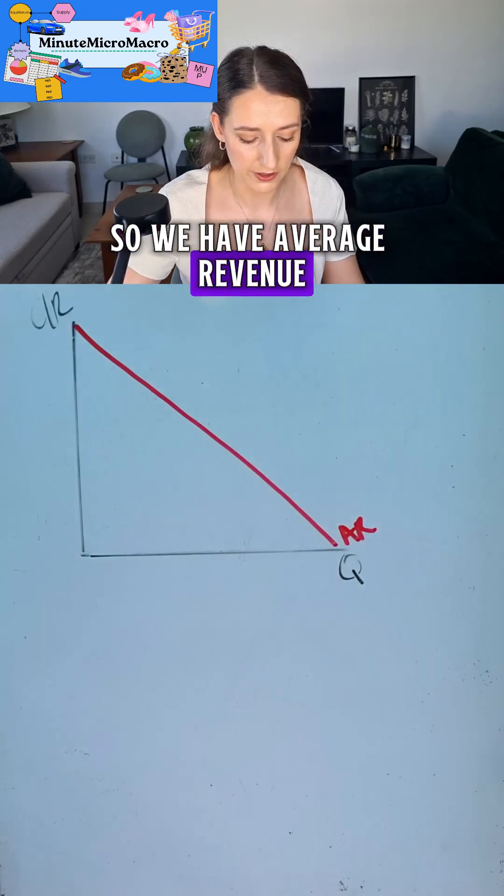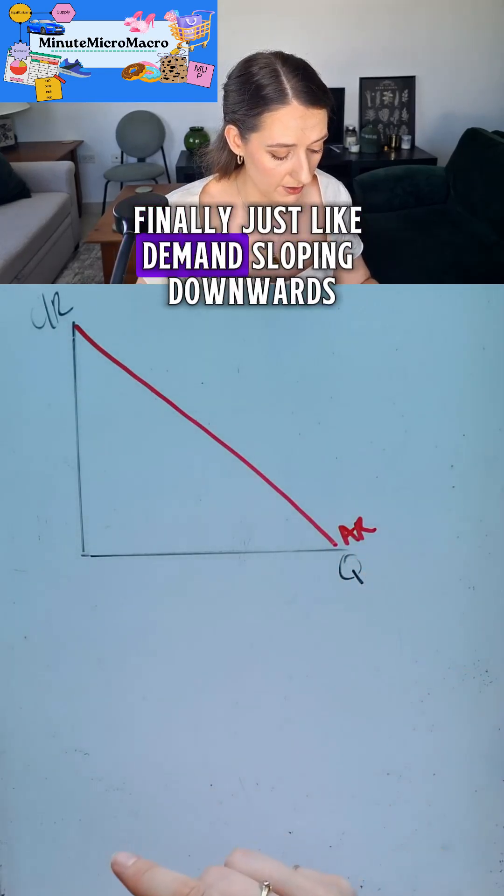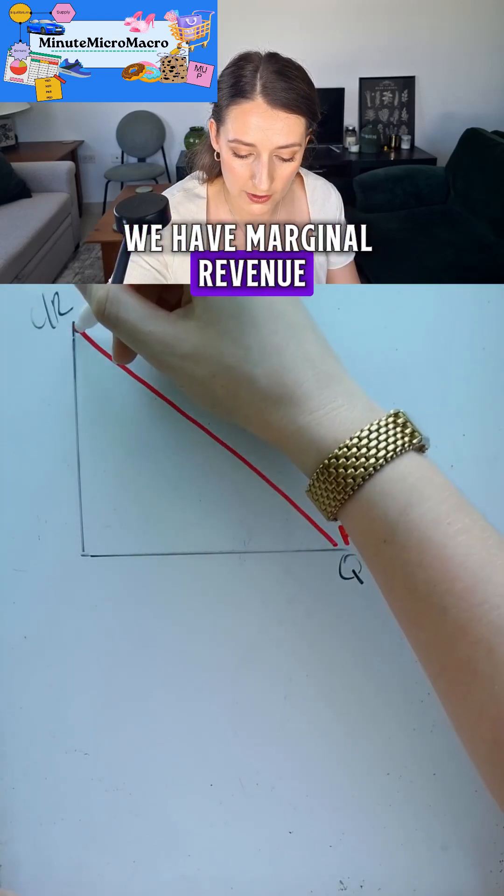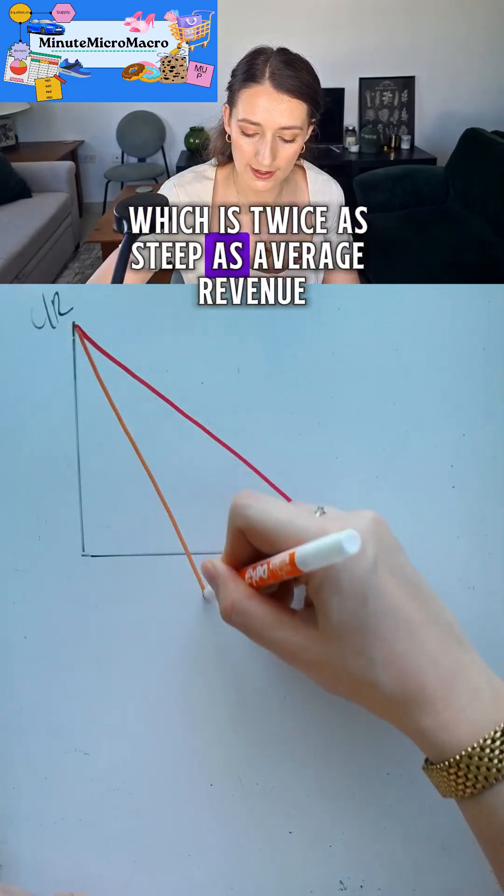So we have average revenue, just like demand, sloping downwards. We have marginal revenue which is twice as steep as average revenue.